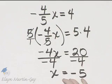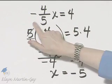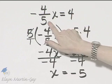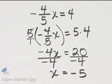Now by the way, this is simply one way to solve. You could have multiplied both sides of your equation by the reciprocal of negative 4 fifths, which is negative 5 fourths. That would have worked also, but I'm just going to go ahead and stick with the steps that I gave you.